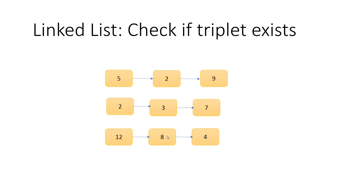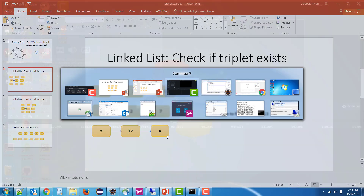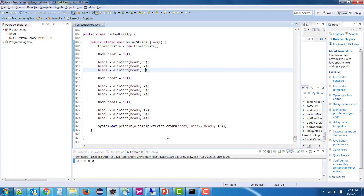That is how we check whether a triplet exists. We sort one list in ascending order, one in descending order, keep the third as is, and apply the two-pointer traversal logic.